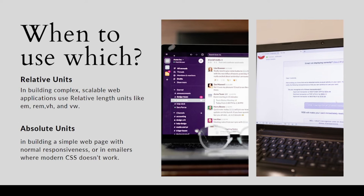When to use which? In building complex scalable web applications, use relative units like em, rem, vh, and vw. VH means viewport height and VW means viewport width. This type of scalable website with many different elements should be built using relative units.